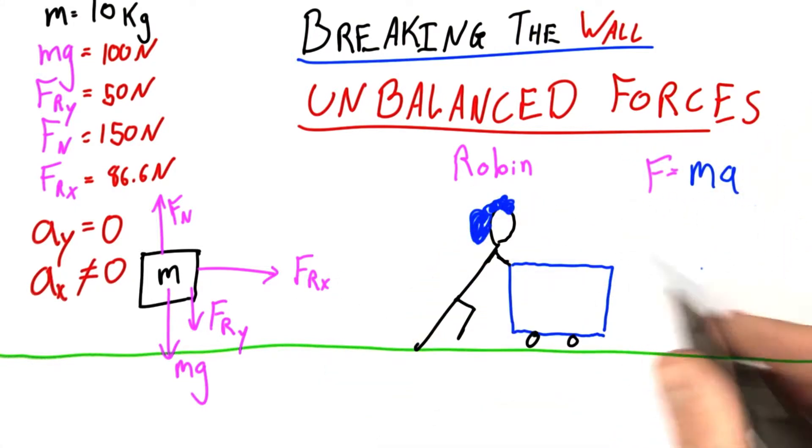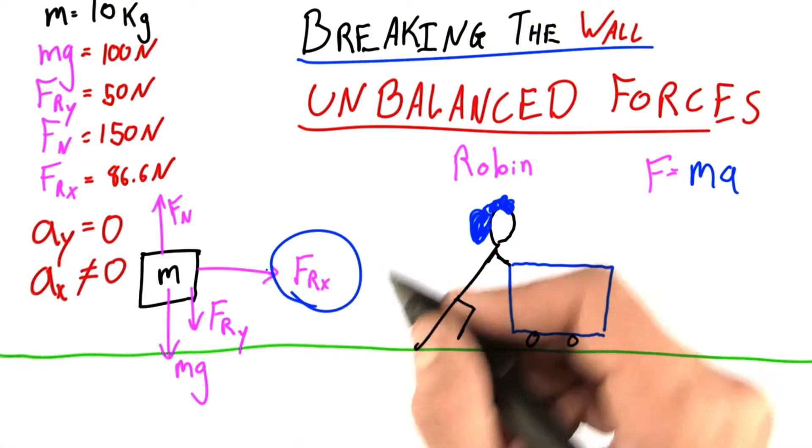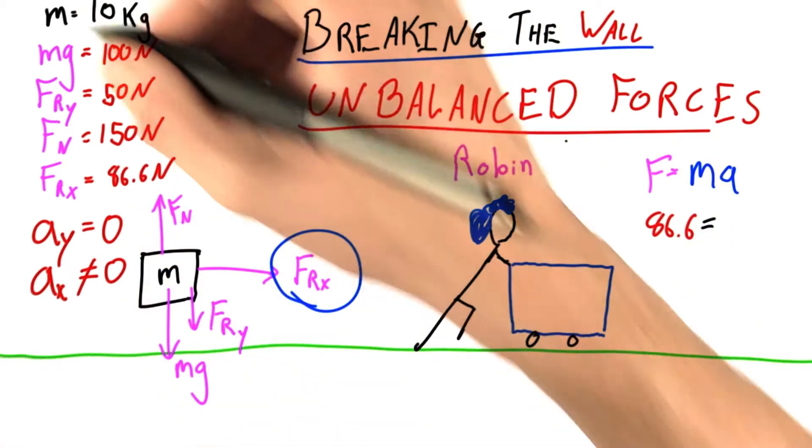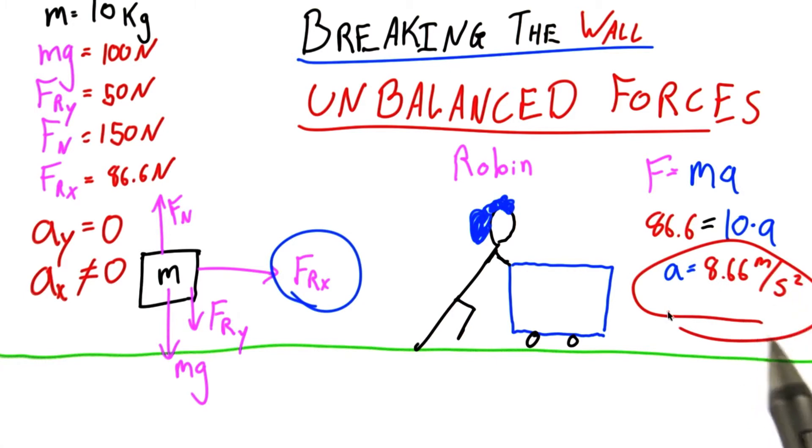It's as simple as saying F equals ma. But now the only force we're using is the unbalanced force, and that's equal to 86.6 newtons. I know the mass is 10, and when I solve, I get a equals 8.66 meters per second squared. Sorry, I did that one all on my own. You'll have a chance in this next one.